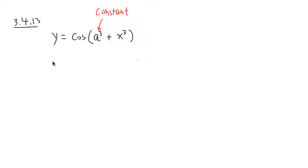Alright, I will show you guys this. Because our function is cosine of something, so the outside function is cosine of a box, like that. And the inside function is going to be a to the third power plus x to the third power.